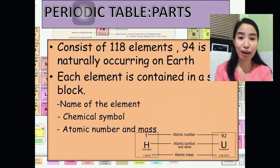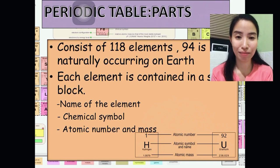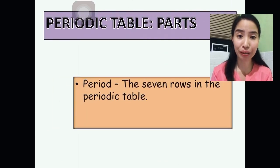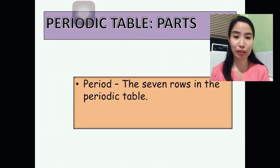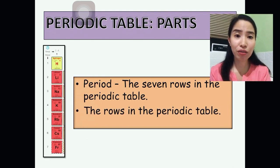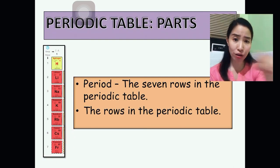So, what are the other parts? We have here the period, the seven rows in Periodic Table. Look at it. There are seven. But if you're going to look at it in Periodic Table, please look horizontally.